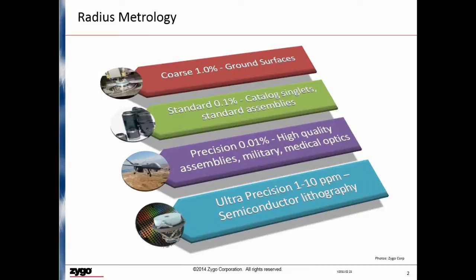As we get to precision optics, such as those used for high end photography and military applications, the required uncertainty migrates to 0.01% or 100 parts per million. And finally, for ultra precision optics, such as those used in lithography, it's necessary to characterize the radius to better than 10 parts per million.